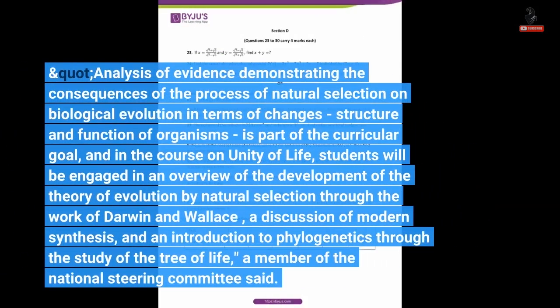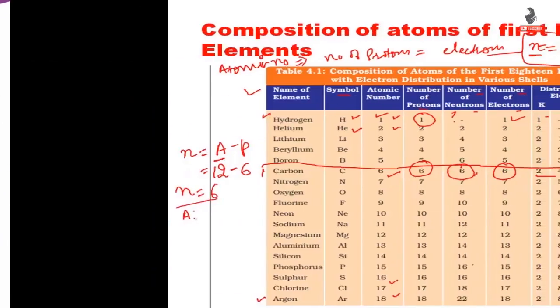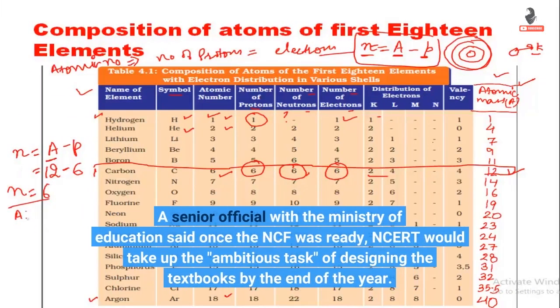Analysis of evidence demonstrating the consequences of the process of natural selection on biological evolution in terms of changes in structure and function of organisms is part of the curricular goal. In the course on Unity of Life, students will be engaged in an overview of the development. A senior official with the Ministry of Education said once the NCF was ready, NCERT would take up the ambitious task of designing the textbooks by the end of the year.